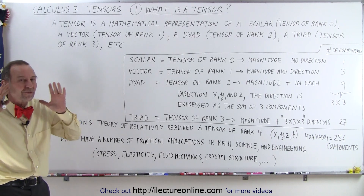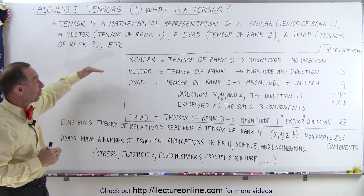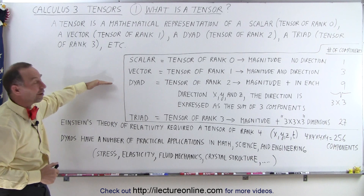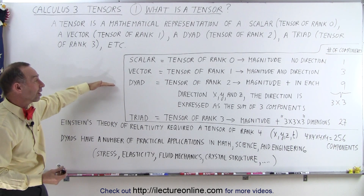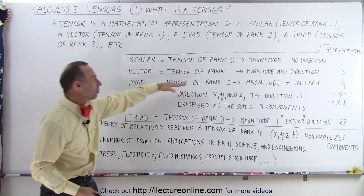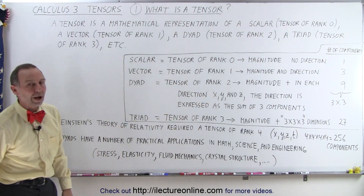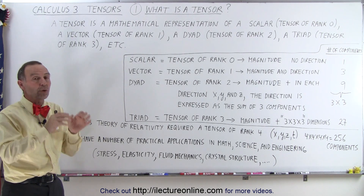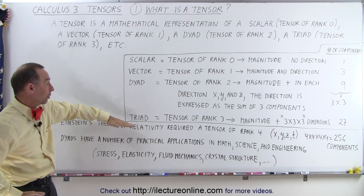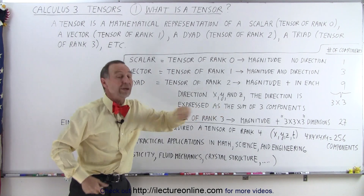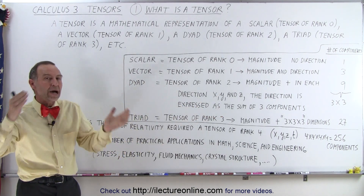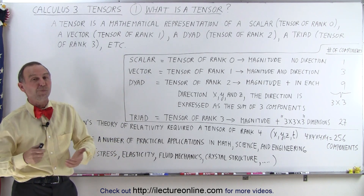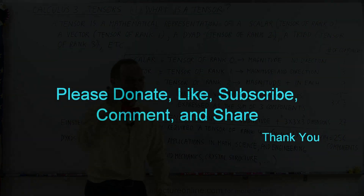At least at this point you have some vague concept of what tensors are. You're familiar with scalars and vectors, which are tensors of rank 0 and 1, and a vague concept of what dyads are — tensors of rank 2 requiring 9 components. We'll also show you all the rules you need to apply tensors, and how to represent them, for example triads with 27 components. That's our first video — more to come. Thank you.